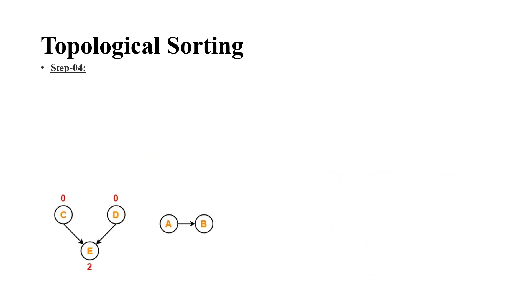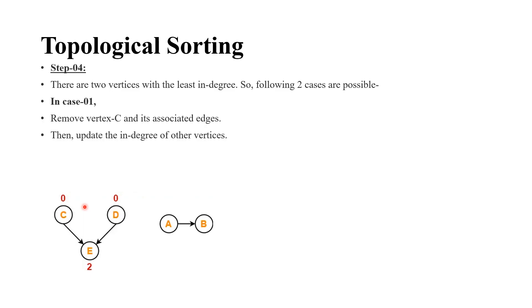Now, we have two least indegree vertices. So, we have to consider two cases. In the first case, we are removing C and its associated edges and update the indegree of other vertices. In the second case, we are removing the vertex D and its associated edges and update the indegree of other vertices.